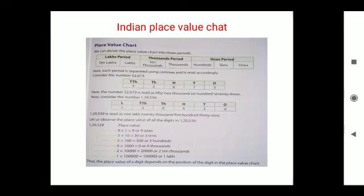If we talk about the Indian place value chart, there are three different categories: ones, thousands, and lakhs. In ones: ones, tens, hundreds. In thousands: thousands, ten thousands. In lakhs: lakhs, ten lakhs.